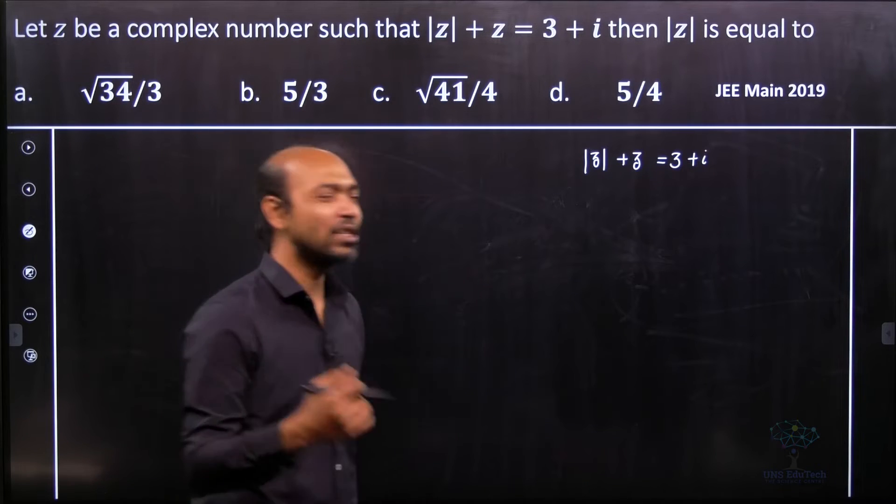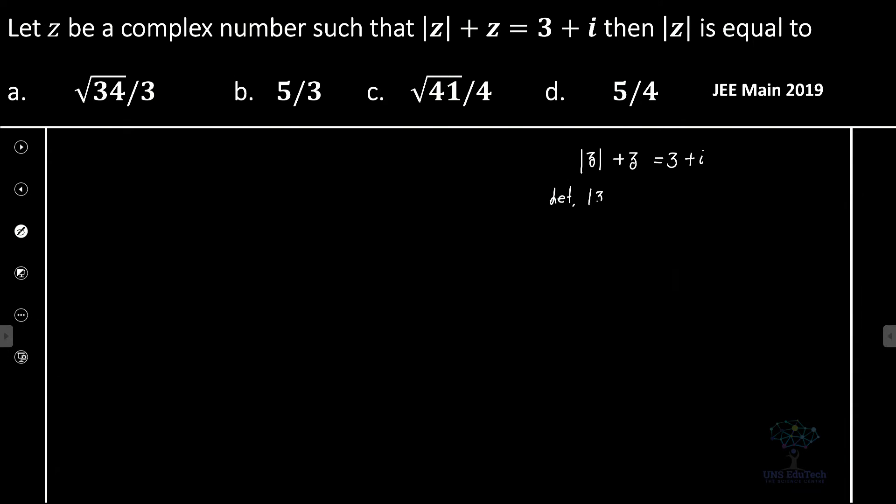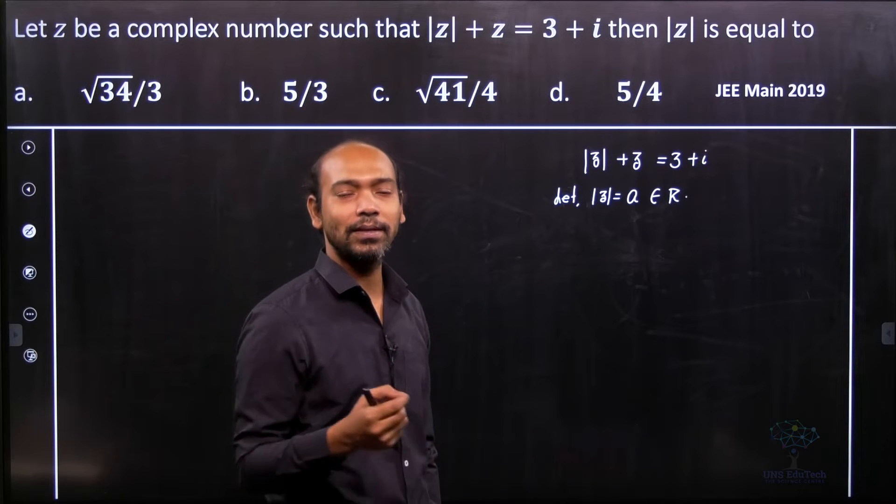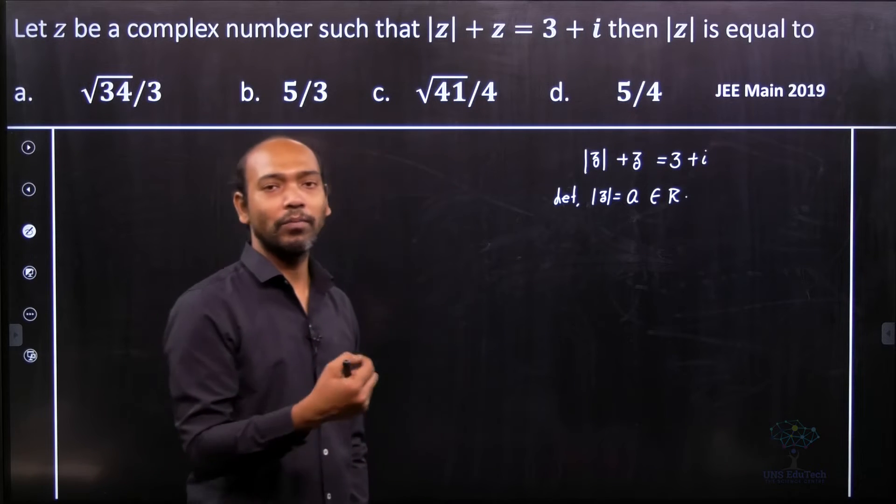Let's assume some number. Let mod z equal the number a, and obviously that is a real number. Because for any complex number, the mod z will be a real number. It represents the distance of the complex number from the origin.